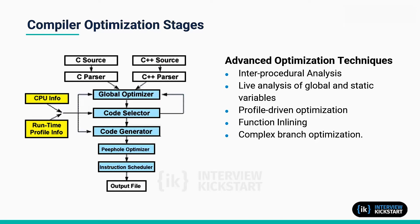These general optimizations are database-driven, so they can be tuned to a particular architecture. For example, the global optimizer uses the database to determine the number of registers available for a particular architecture. The code selection and generation process utilize the same database as the global optimizer to determine the optimal assembly language instructions to implement the intermediate language operations.